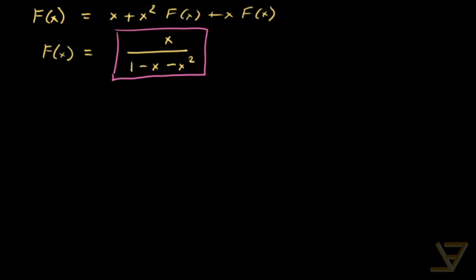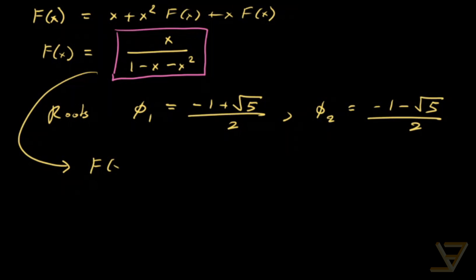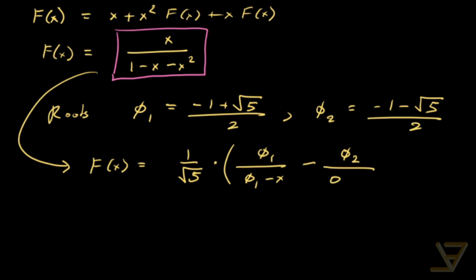Next we're going to use some partial fraction decomposition. We find that the roots of the denominator are φ₁ and φ₂ — you can use the quadratic formula for this. φ₁ equals negative 1 plus square root of 5, over 2; and φ₂ equals negative 1 minus square root of 5, over 2. So these are radical conjugates of each other. Using partial fraction decomposition, we find that F(x) equals 1 over square root of 5 times φ₁ over (φ₁ minus x) minus φ₂ over (φ₂ minus x).